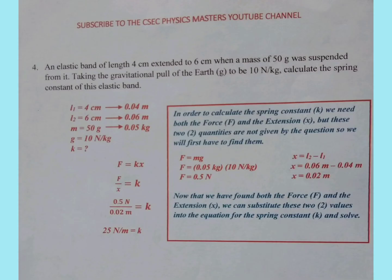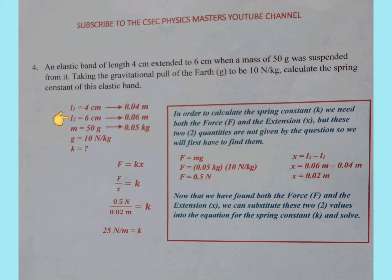Moving on to another question type. It reads that an elastic band of length 4 centimeters extended to 6 centimeters when a mass of 50 grams was suspended from it. Taking the gravitational pull of the earth to be 10 Newtons per kilogram, calculate the spring constant of this elastic band. We list the values: L1 is equal to 4 centimeters, converted it becomes 0.04 meters. L2 is equal to 6 centimeters, converted it becomes 0.06 meters. The mass is 50 grams, converted to 0.05 kilograms. Gravity is listed as 10 Newtons per kilogram, and we are finding K.